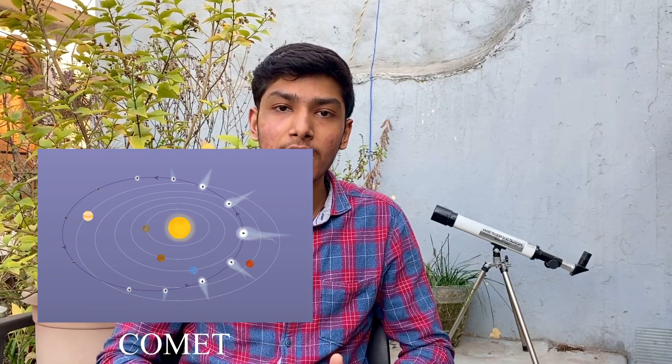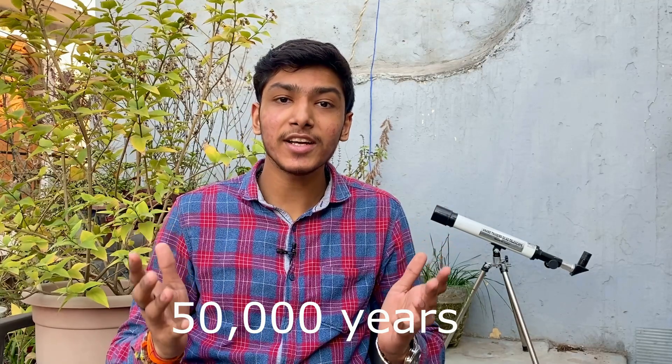Also, comets have a highly eccentric orbit around their host star, whereas an asteroid has a planetary kind of motion, as you can see in the image describing the orbit difference between both of them. Comets have an orbital time period which can be hundreds of years. Talking specifically about this comet, it will come back after 50,000 years.